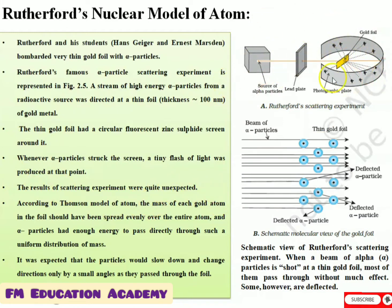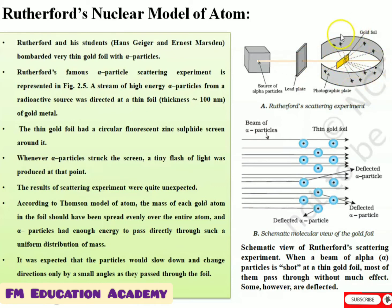This experiment is called a scattering experiment because the alpha particles are redirected from the lead plate to the circular zinc sulfide plate and onto the gold foil, where they get scattered. That is why it is called a scattering experiment.